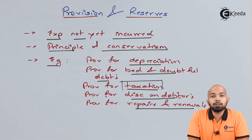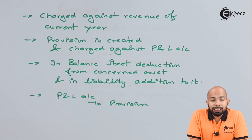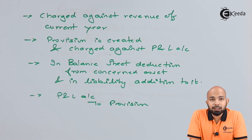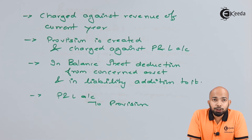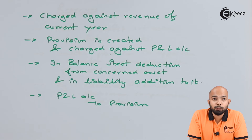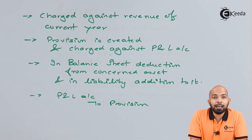We will have further details on how a provision affects the profit and loss account and how it is placed in the balance sheet against the assets and liabilities for which it has been created. When we talk about any provision created, it is charged against the profit and loss account for the current year. The provision might be created for the next few years, but it is always charged to the current year's profit and loss account.